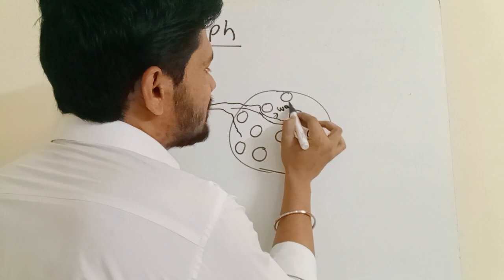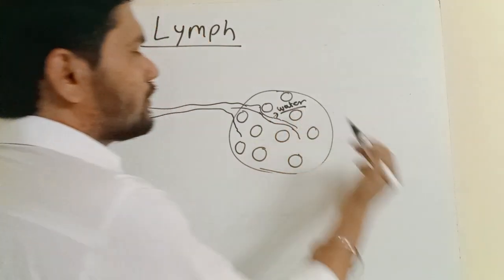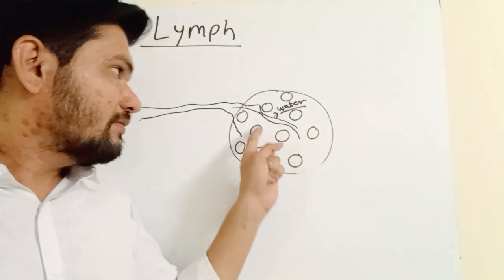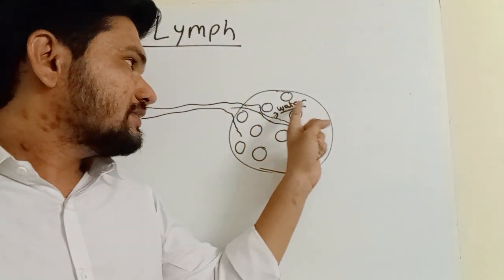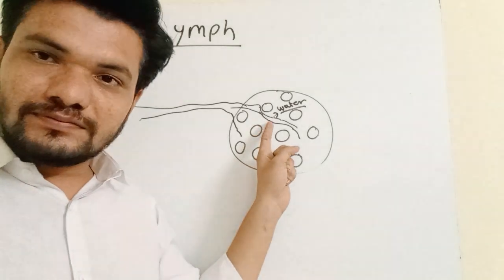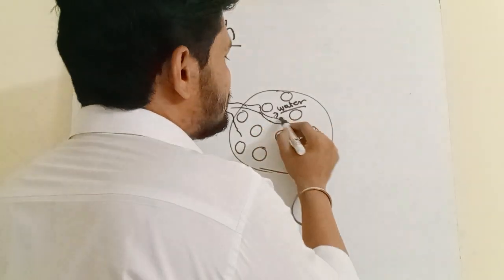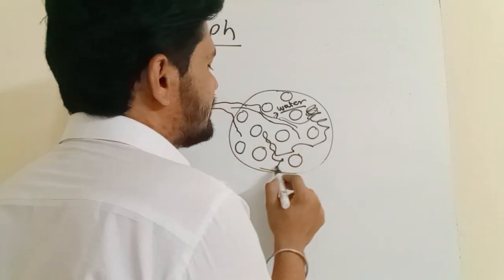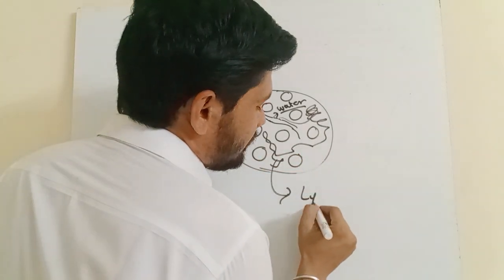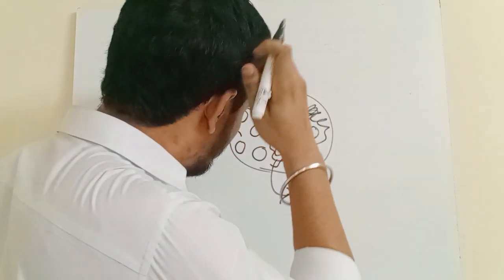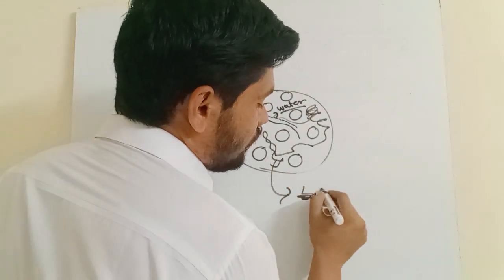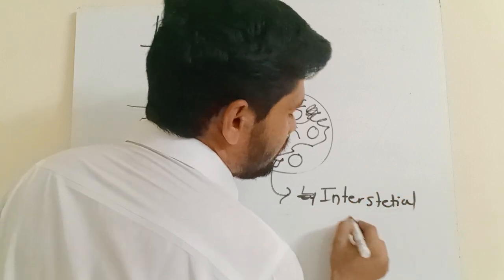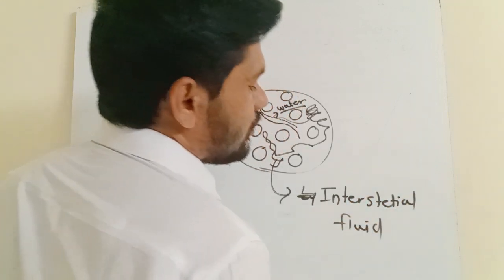In the interstitial space, some amount of water along with some water-soluble substances present in the blood comes into these interstitial spaces. This fluid which enters the interstitial space is called the tissue fluid or interstitial fluid.